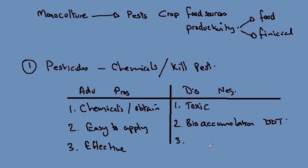The third disadvantage is that mutation in the pest often leads to resistance, meaning the pesticide must be applied in higher concentrations — making it more toxic — or it may no longer work at all, requiring an alternative pesticide to be found.